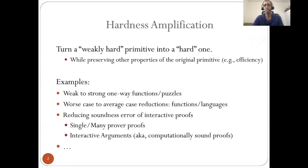There are various examples from different fields. In cryptography: weak to strong one-way functions or puzzles. In complexity theory: worst case to average case reductions of functions or languages. Also in interactive protocols: reducing the sound error of interactive proofs, single prover, many prover, and also interactive arguments, which are the focus of this talk, also known as computationally sound proofs.